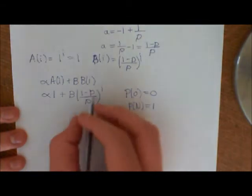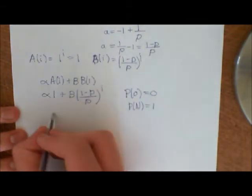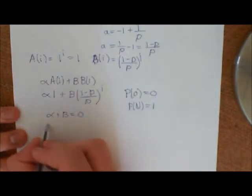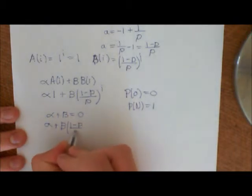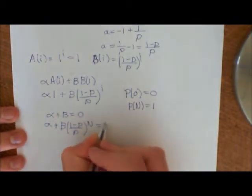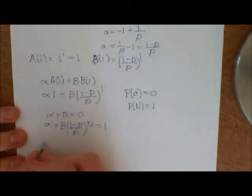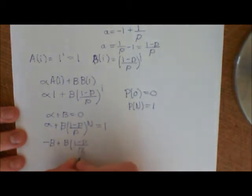So P(0), stick in 0, this goes to 1, so you get that α + β, which is P(0), must equal 0, and P(N) gives us α + β(1-P)/P to the power of N is equal to 1. So now just simultaneous equations. This one gives us that α is equal to negative β, so -β + β(1-P)/P to the power of N is equal to 1. Factor out the β, and you get ((1-P)/P)^N minus 1 is equal to 1.